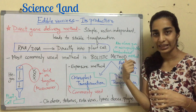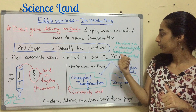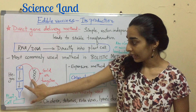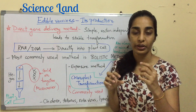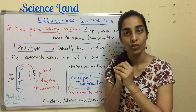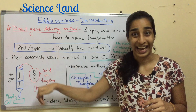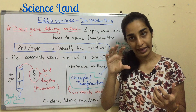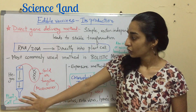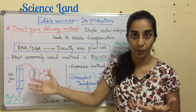The most commonly used method for direct gene delivery is the ballistic method, also known as the gene gun method or micro-projectile bombardment method. You take your DNA or RNA, coat it onto a gold or tungsten micro-carrier, and place it in a gene gun. Under high pressure of helium gas, the micro-carrier with the DNA or RNA is fired directly into the plant cell. No vector is used.